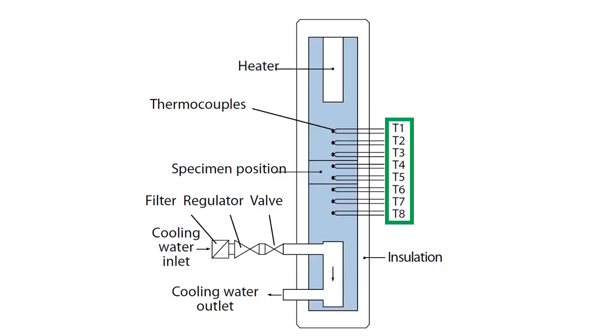Thermocouples are positioned along both the heated section and cooled sections at uniform intervals of 15 mm to measure the temperature gradient along these sections.